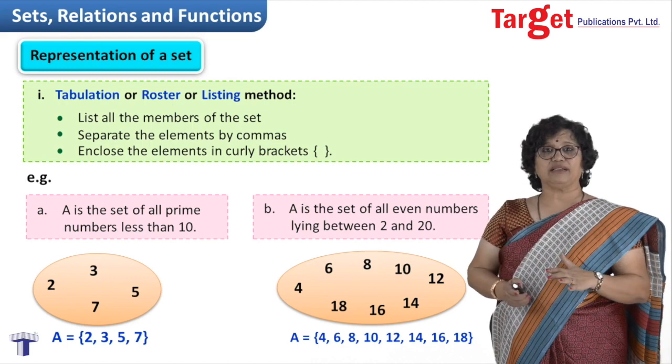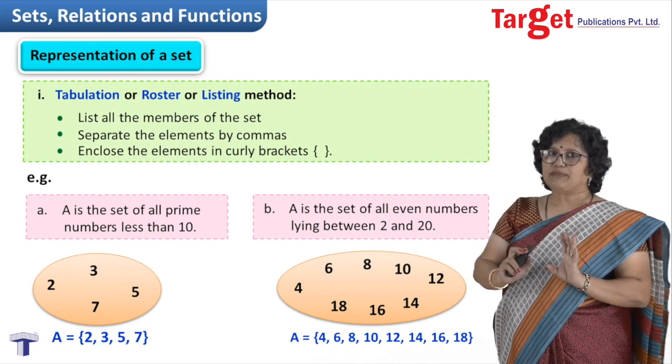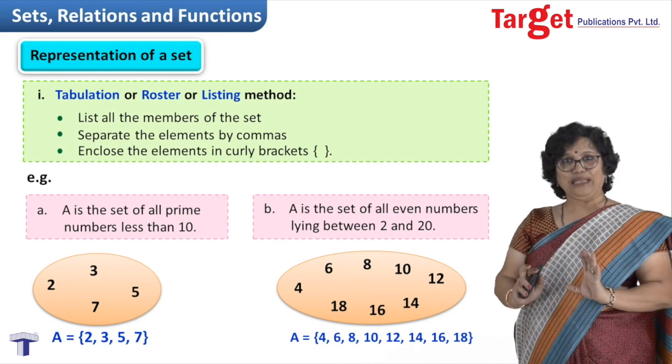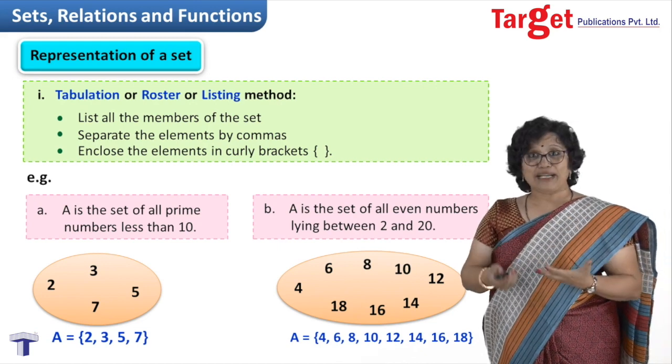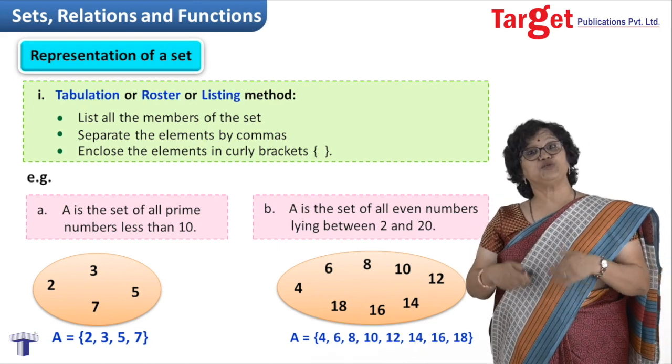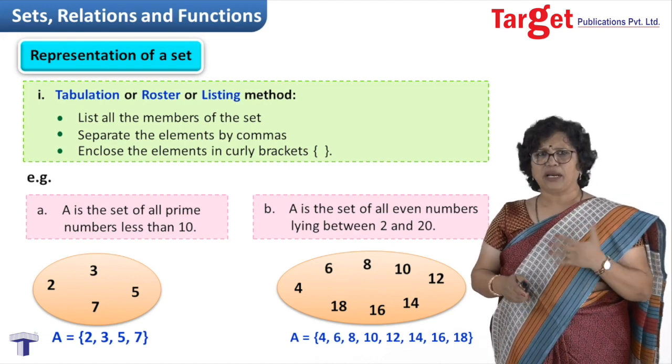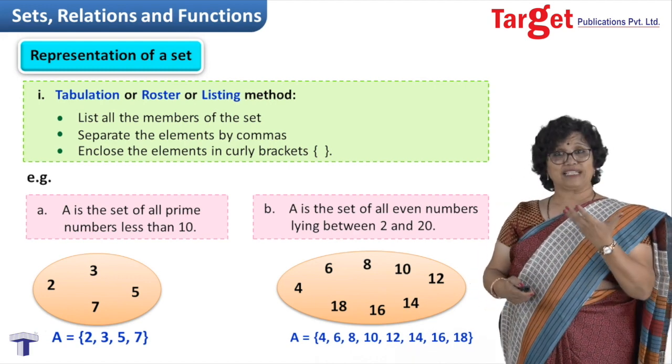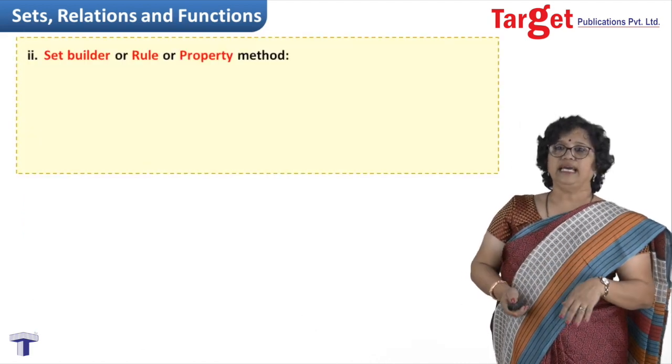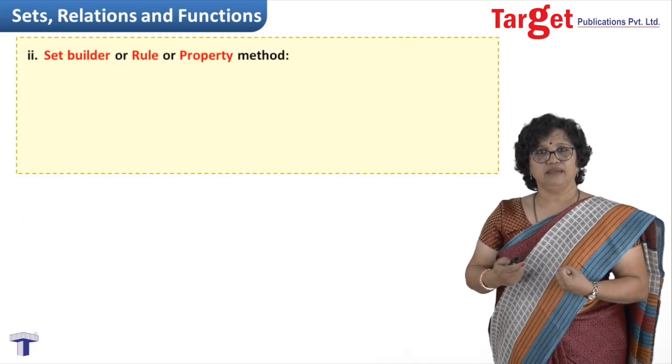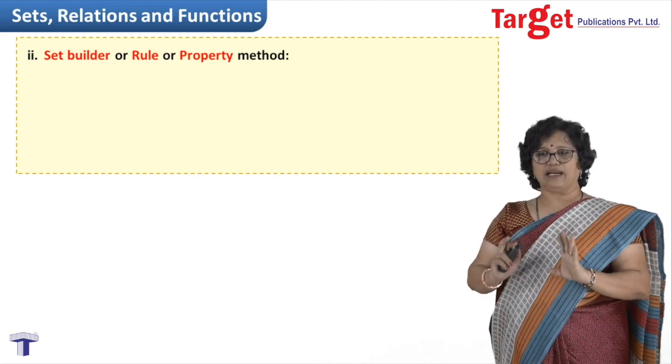Now this is the listing method. You all must be realizing that this listing method is actually useful only when the number of elements is less. If the number of elements is more, then listing method has its own limitations. Not everywhere can you use it. So I go to the next method of showing the set - it is called set builder, also called the rule or property method.